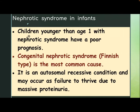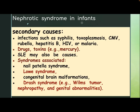Nephrotic syndrome in infants: children younger than age 1 year with nephrotic syndrome have a poor prognosis. Congenital nephrotic syndrome, Finnish type, is the most common cause; it is an autosomal recessive condition and may present as failure to thrive due to massive proteinuria. Secondary causes in infants include infections such as syphilis, toxoplasmosis, cytomegalovirus, rubella, hepatitis B, HIV, or malaria; drug toxins like mercury; and SLE. Associated syndromes include nail-patella syndrome, Lowe syndrome, congenital brain malformation, and Denys-Drash syndrome, in which patients may have Wilms tumor, nephropathy, and genital abnormalities.